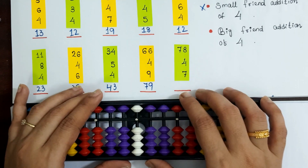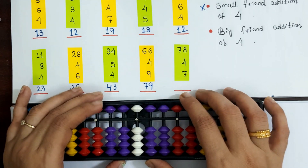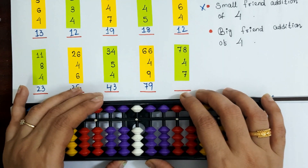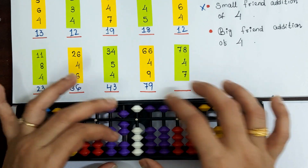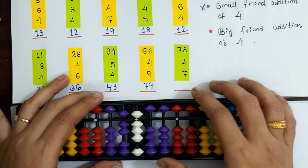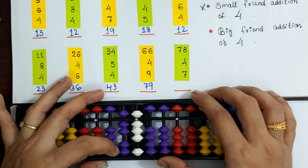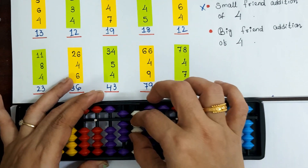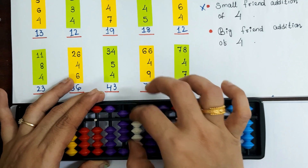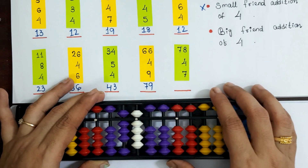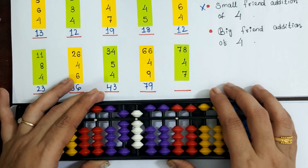Last example: 78 plus 4 plus 7. Using plus 10 minus 6, then plus 7. Answer is 89.